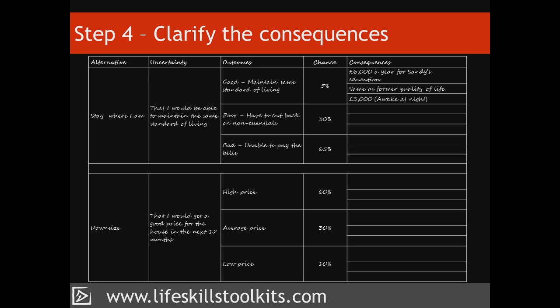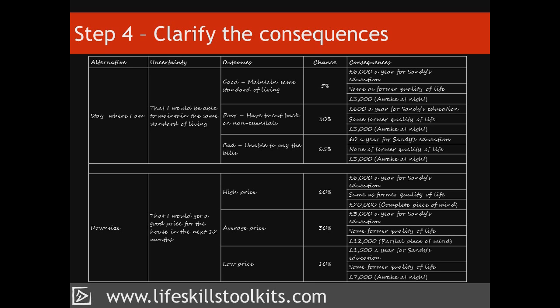Franny now repeats the same process for her second and third outcomes – poor (having to cut back on non-essentials) and bad (unable to pay the bills). Having worked through the stay-where-I-am alternative, Franny now turns to her downsize alternative. Just as she's done before, she applies each of her three objectives to the outcomes – high, average and low – so that she has a consequence for Sandy's university education, quality of life and financial peace of mind.